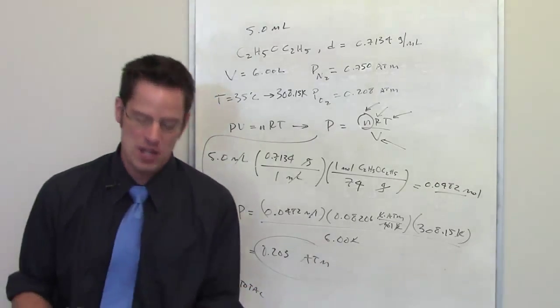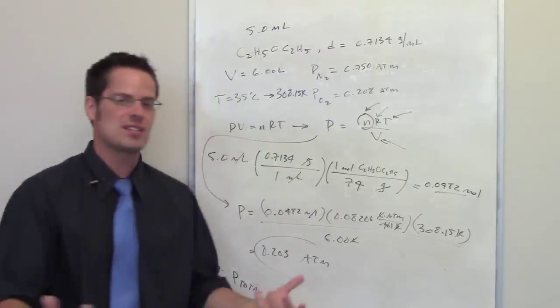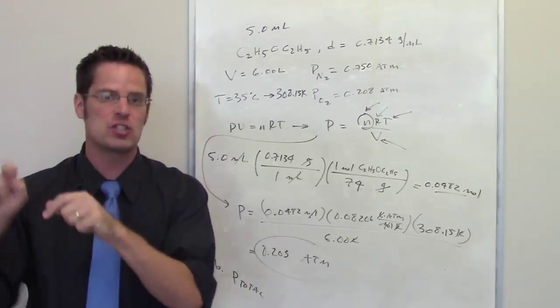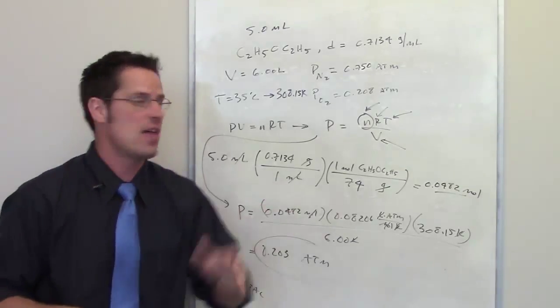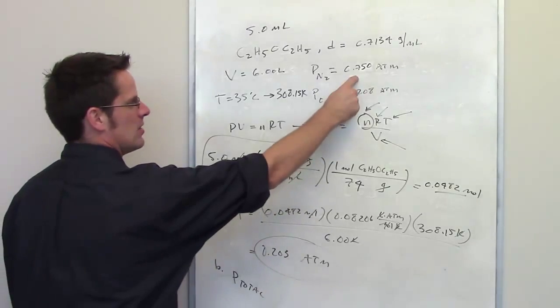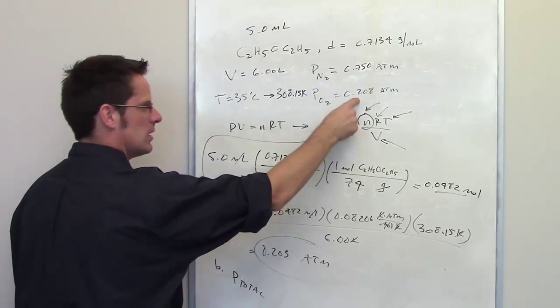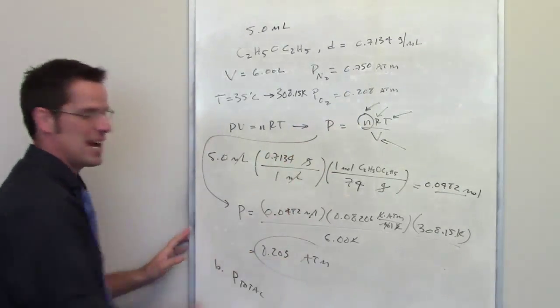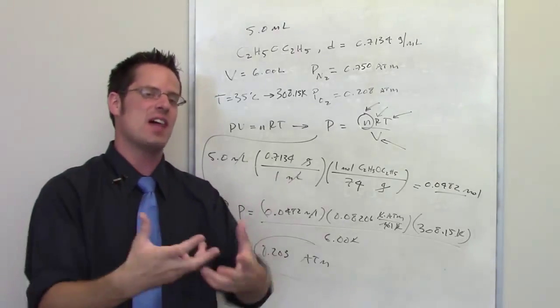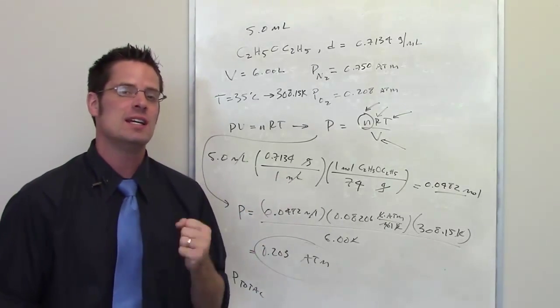Now according to Dalton's law the total pressure of a chamber that has multiple gases in it is equal to the individual pressures of each gas added together. So all I have to do is add the pressure of the nitrogen, the pressure of the oxygen, and the pressure of the diethyl ether all together and that will give me the total pressure of the system.